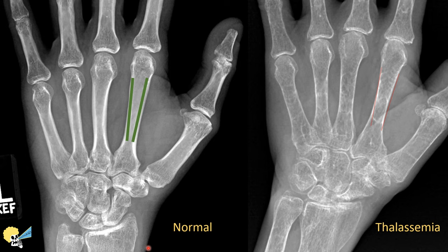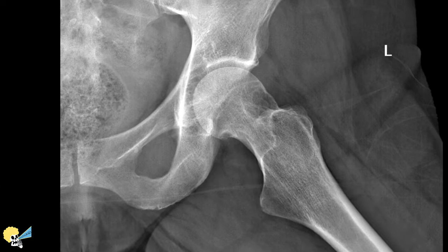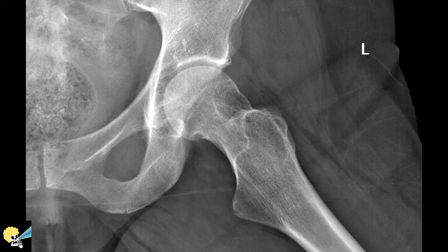So, one last case. Here is another young patient with apparent thickened trabeculae within the left femoral neck as compared to the right. In fact, what we have here is an intraosseous lesion of the left femoral neck, which displaces the normal trabeculae, as we can clearly see on the lateral view.